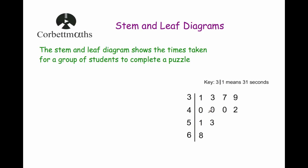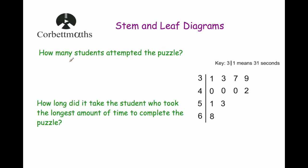Let's answer some typical questions on it now. Our first question: how many students attempted the puzzle? Each of the leaves represents one student. So this student completed in 31 seconds, the next leaf tells us the next student completed in 33 seconds, and so on. So let's count those — there are 11 students who attempted the puzzle.